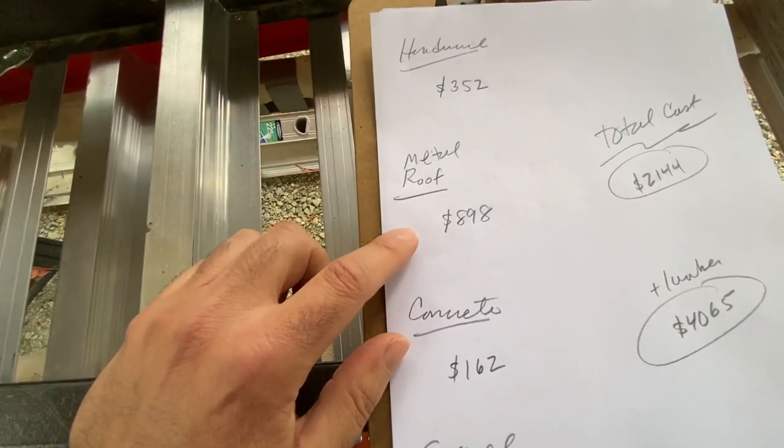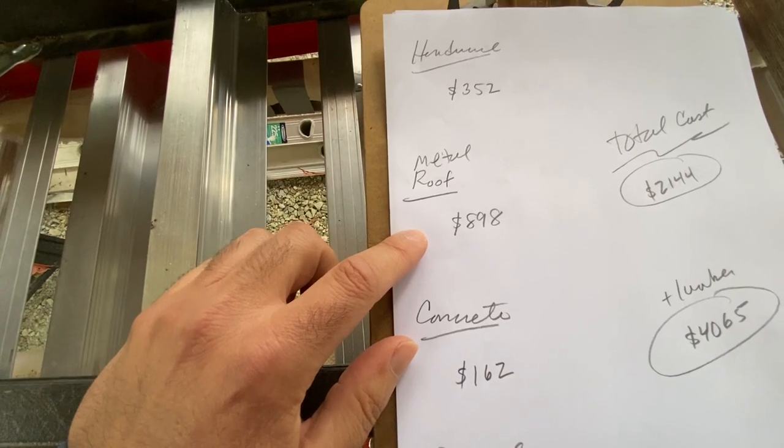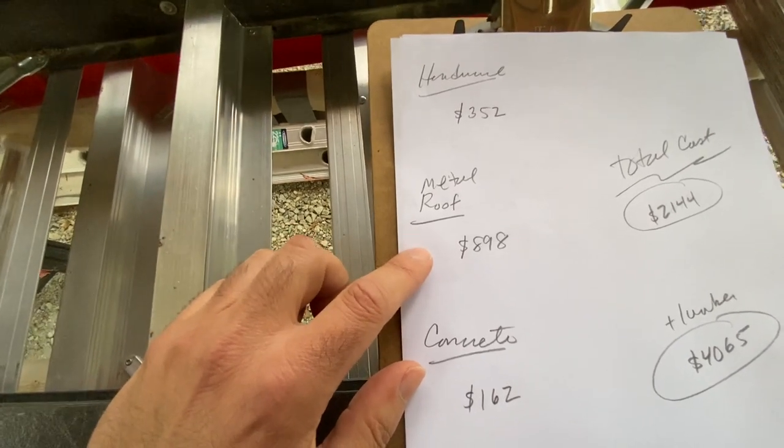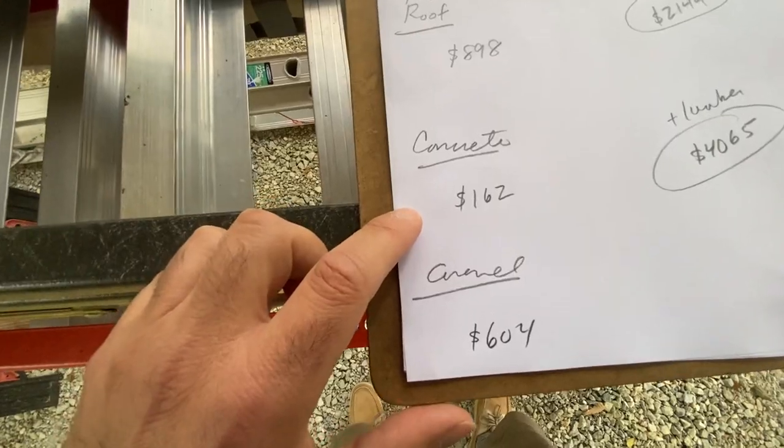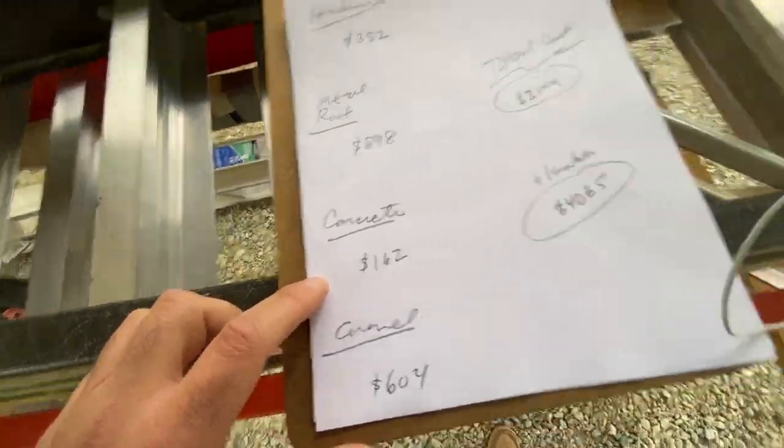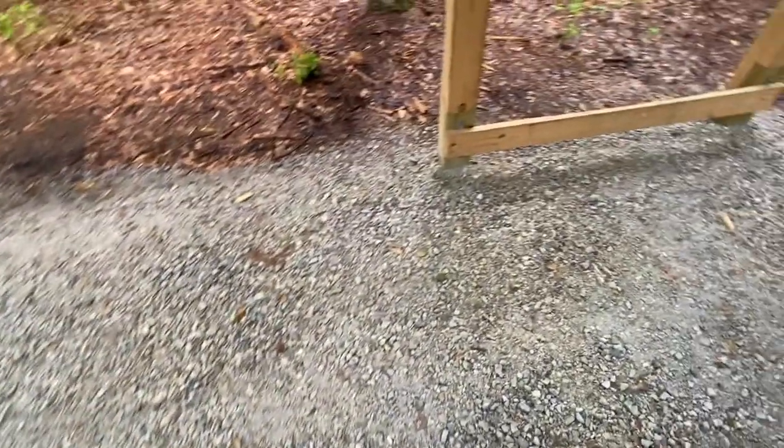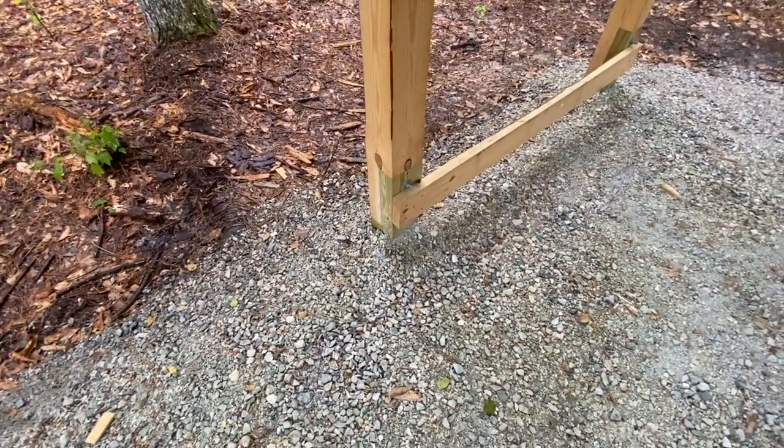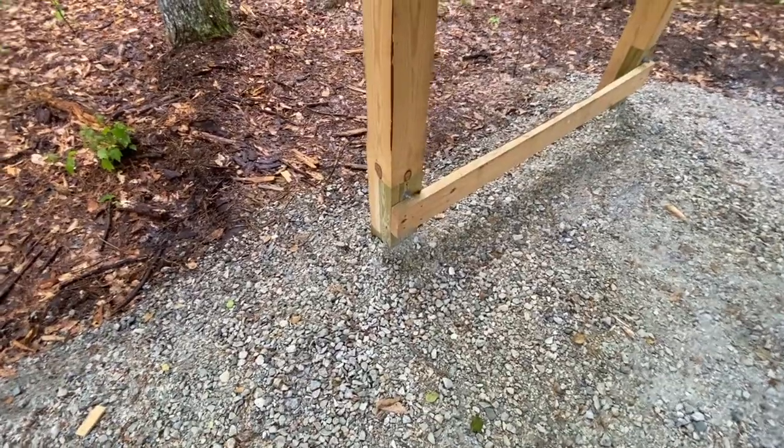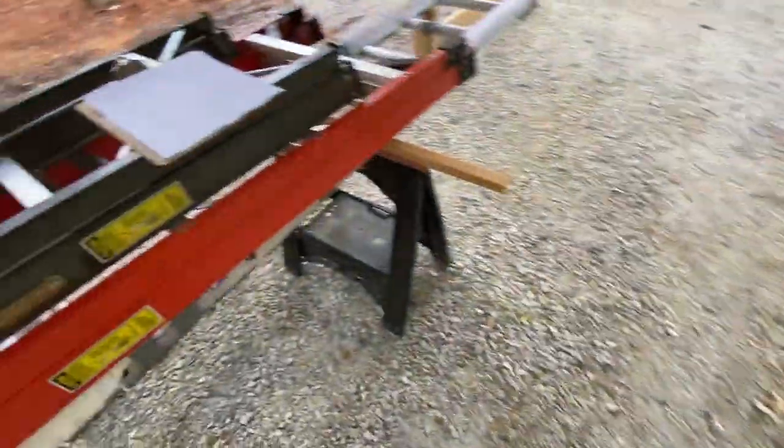I spent $898 on the metal roof, and we'll come back to that in a second. I spent $162 on concrete mix for basically pouring footings down at each post hole, and then I backfilled the posts with dry mix afterwards.